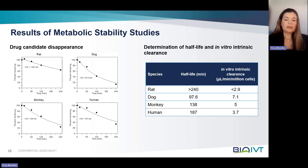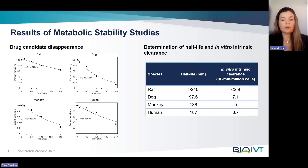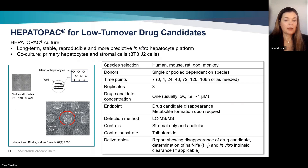Now let's take a closer look at the deliverables. On the left you can see typical graphs of a metabolic stability study showing the drug candidate disappearance over time in different species — here rat, dog, monkey, and human were evaluated. The data is then used to calculate the half-life and in-vitro intrinsic clearance, which is shown in the table on the right.